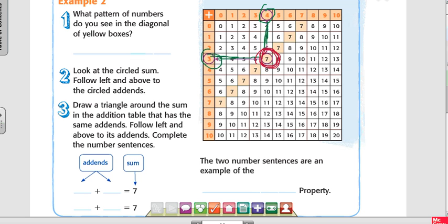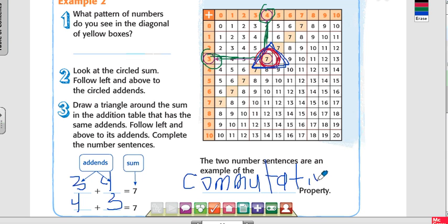It says draw a triangle around the sum in the addition table that has the same addends. So what two numbers make seven? Three and four, or four and three. And what property is that called? Commutative. The two number sentences is an example of commutative property.